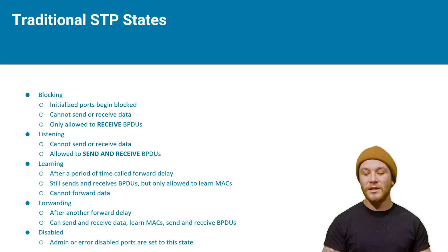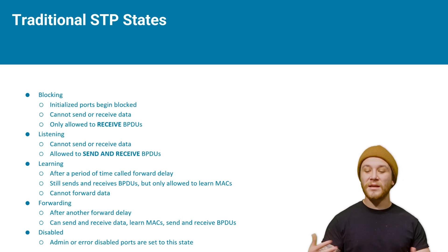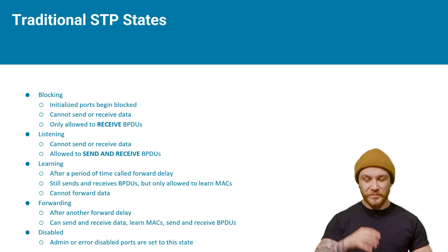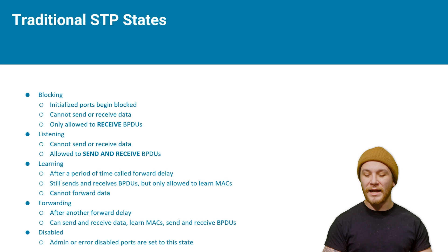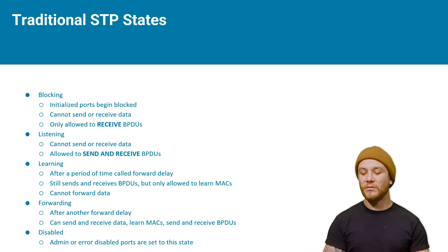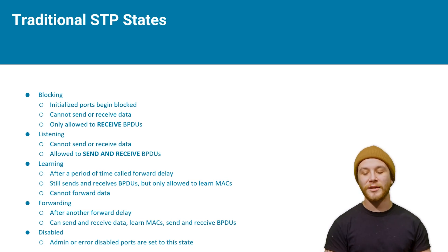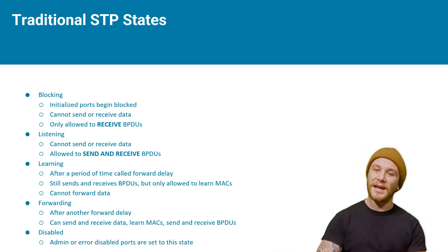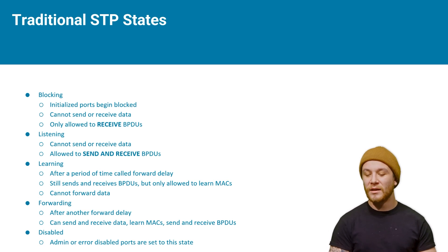The next state is listening — still cannot send or receive data, so that ARP would not pass — but the switch is allowed to send and receive BPDUs and is negotiating who is going to block a port in this topology. After a period of time called the forward delay, you move to the learning state — still sending and receiving BPDUs, and now allowed to learn MAC addresses. The switch can recognize the source MAC address of a frame and annotate it in the MAC address table, but still cannot forward any data.